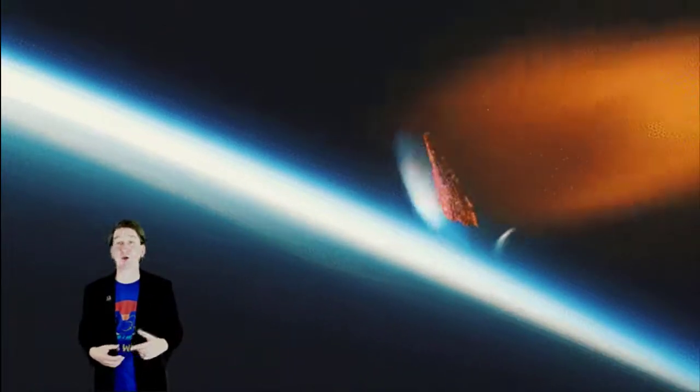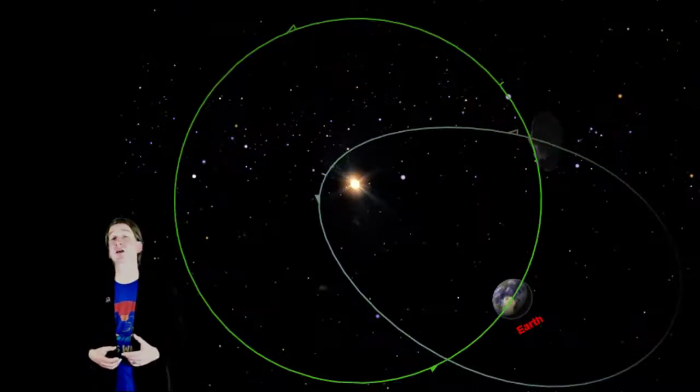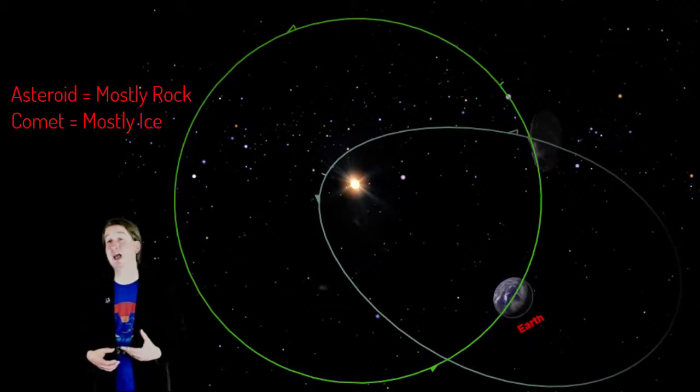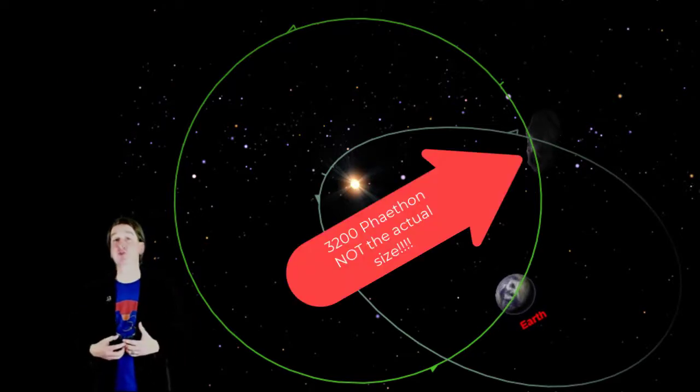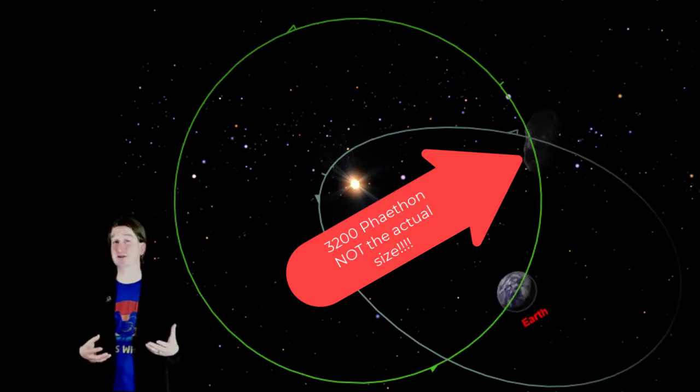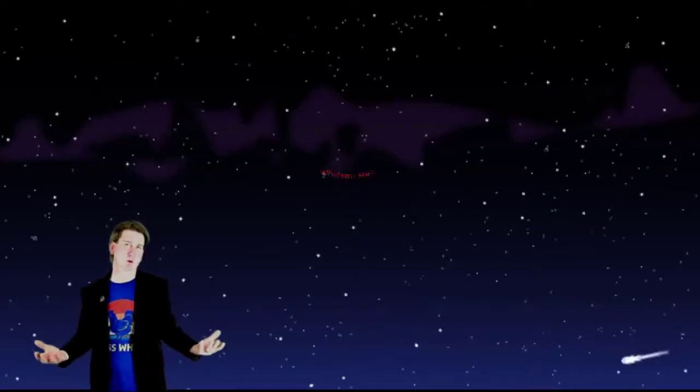The Geminid meteor shower is unique because it comes from the cosmic debris left from an asteroid, not a comet like most meteor showers. This shower is from the debris of asteroid 3200 Phaethon. Now that we know what a meteor is and why meteor showers happen, what can you expect to see?